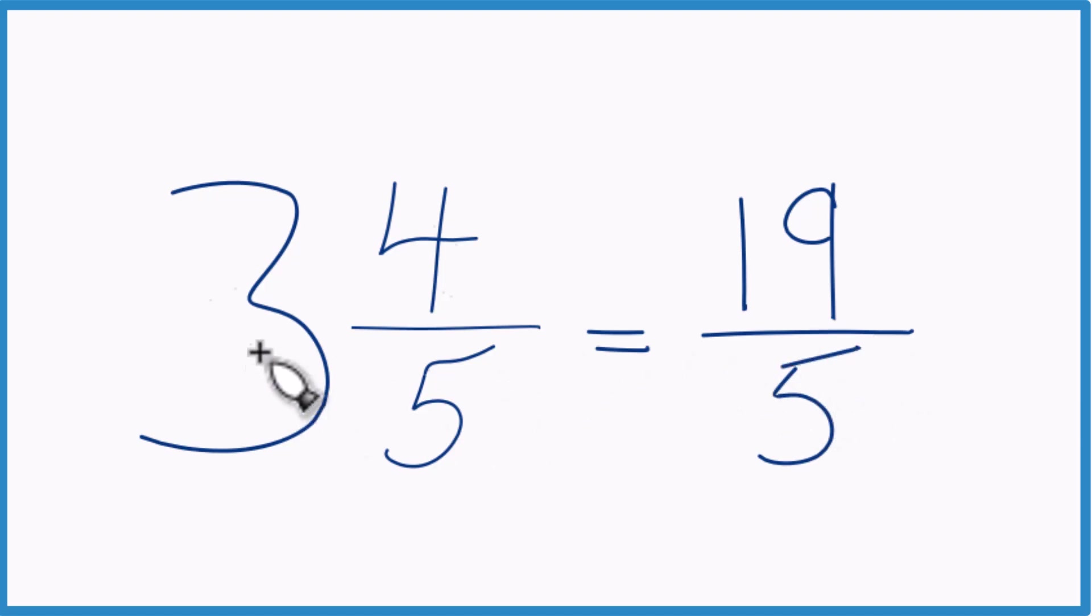So the mixed number 3 and 4 fifths equals the improper fraction 19 fifths. And it's improper because 19, that's a larger number than 5.